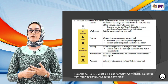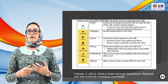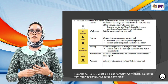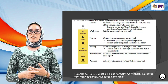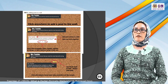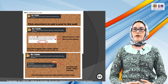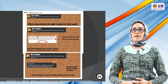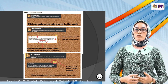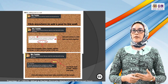Notifications: choose if you want to be emailed each time someone adds a post. Address allows you to create a custom URL for your wall — it's advisable to create your own address so you can remember it more easily. To add posts, click anywhere on the wall after creating it. You can add your name or title, then add text or any content you want. You can also use tools to edit or delete your post.